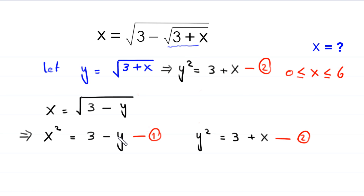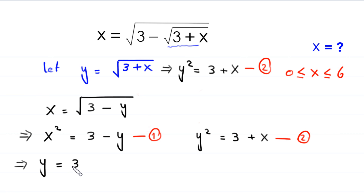From equation 1, moving the negative y to the left-hand side and x squared to the right, this implies y equals 3 minus x squared. We call this equation 3.